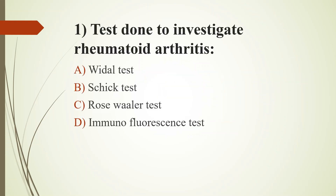Test done to investigate rheumatoid arthritis. Option A: Vidal test. Option B: Schick test. Option C: Rosewaller test. Option D: Immunofluorescence test. Answer is Option C, Rosewaller test.